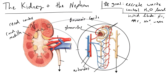From Bowman's capsule, the filtrate — concentrated in the good stuff we want to recover — passes into something called the proximal convoluted tubule. Proximal means near, so this is near the glomerulus, and convoluted refers to the fact that it's coiled up. What happens in the proximal convoluted tubule is that we begin to reabsorb mostly sodium ions, and the rate of reabsorption is dictated by a hormone called aldosterone.